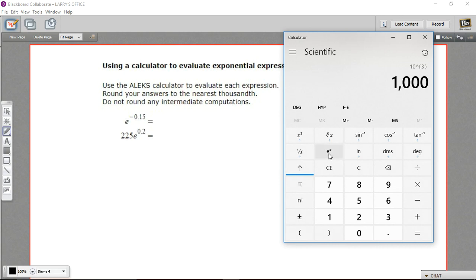So here's e to the x. So if I want to figure out e to the negative 0.15, I would just type in 0.15, make it negative, and then hit e to the x.